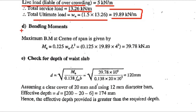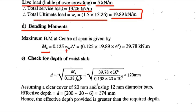Next we calculate the bending moment. For a simply supported beam, maximum bending moment equals WL²/8, which is 0.125 into Wu into L². With Wu equal to 19.89 kN/m and L equal to 4 m, the bending moment equals 0.125 into 19.89 into 4², giving a total moment of 39.78 kN·m.